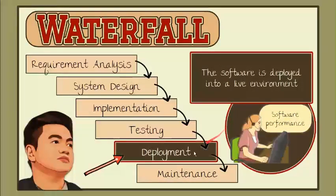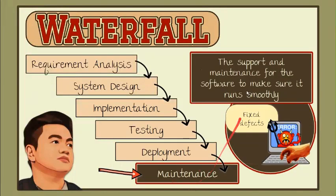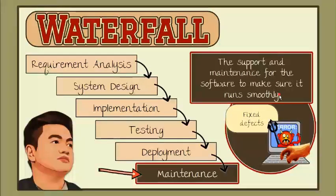Fifth, deployment. In this phase, the software is deployed into a live environment in order to test its performance by the end users. Sixth, maintenance. In this phase, support and maintenance for the software are provided to make sure it runs smoothly. If the client and users come across errors, defects, or bugs during use, the software has to be fixed.